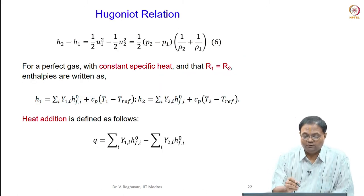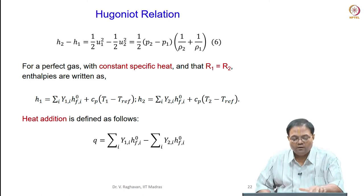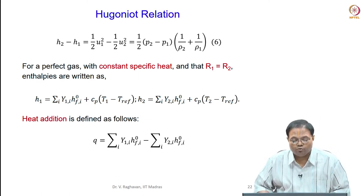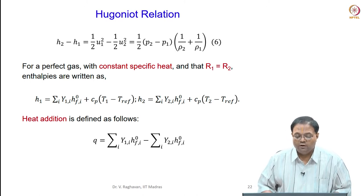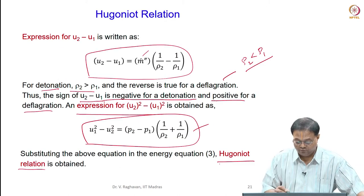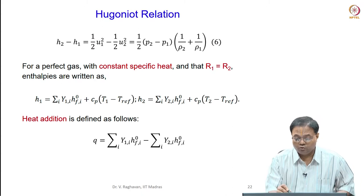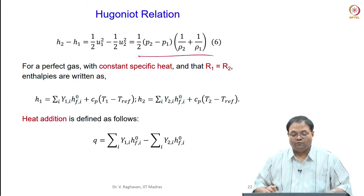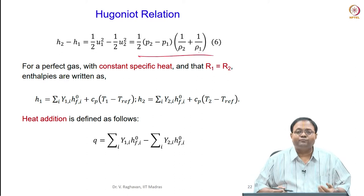The Hugoniot relation gives: h₂ minus h₁ equals half times (u₁² minus u₂²). We know that u₁² minus u₂² equals (P₂ minus P₁) times (1/ρ₂ plus 1/ρ₁). Substituting that in gives us the Hugoniot equation. Now some assumptions have to be made.